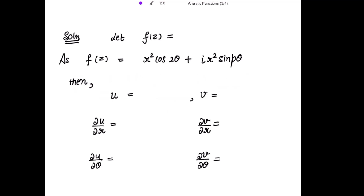Let f(z) = u + iv. Comparing the real parts and imaginary parts, we get the value of u as r²cos(2θ) and the value of v as r²sin(pθ).